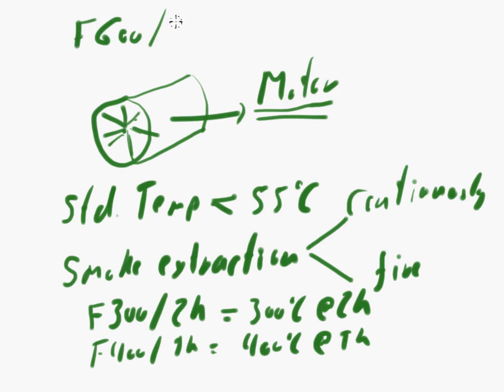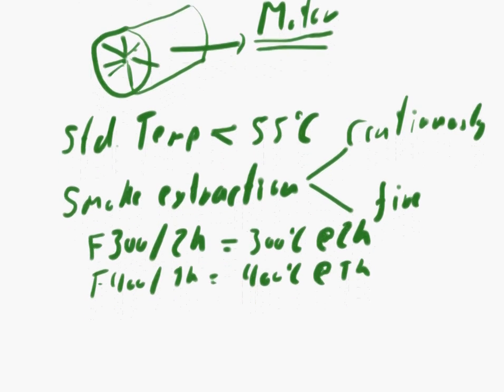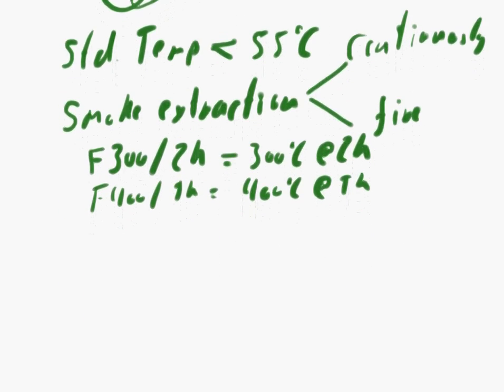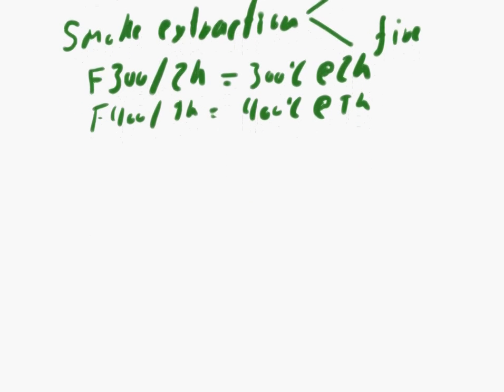Now, these fans are a bit special. And basically, with F600, you have some fans which can withstand 600 degrees, but these fans are a bit different. Here, no motor can withstand 600 degrees. So what they do is they have that motor, but that motor is isolated from the airstream.